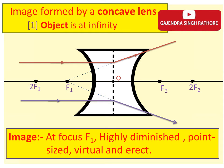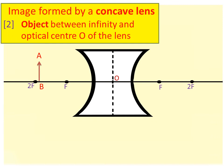Now we will discuss image formed by concave lens in the second situation, which will be our ultimate situation — when object is between infinite and optical center of the lens anywhere. This is our object and it is between optical center O and infinite.